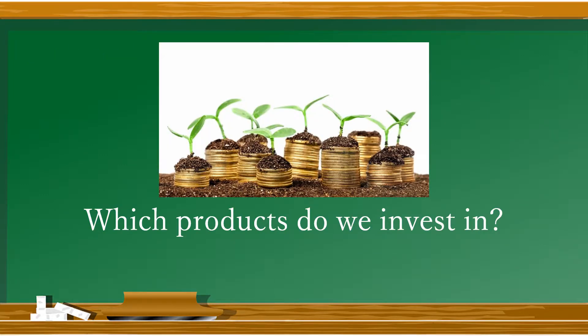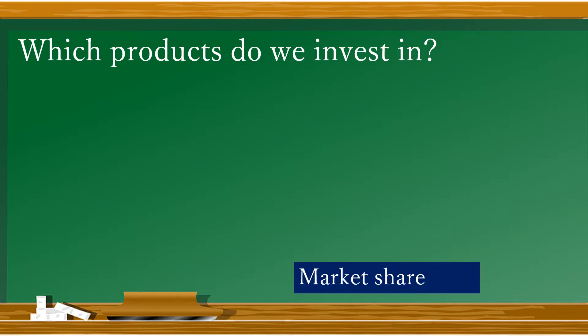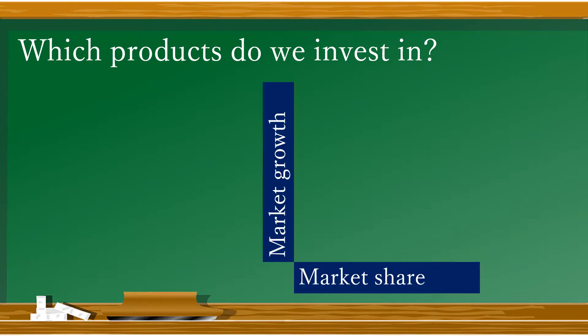Now we can put our decision-making tool into business terms. A common problem companies with a lot of products have is knowing which ones to invest in. Let's pick two factors for looking at the problem. We have some products which have a larger market share, and some which are growing faster in other markets. Although products fall somewhere on this grid, we can come up with four simple categories and assign each a different investment choice. Our first option is going to be to milk our high market share products — let's call them cows.